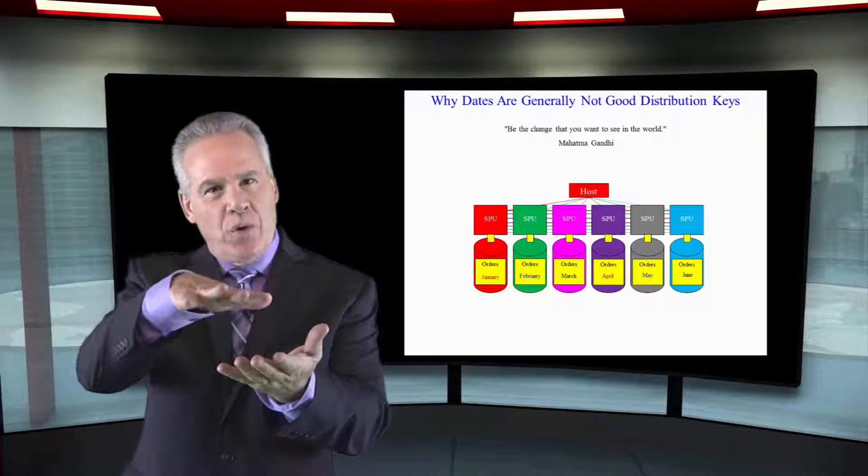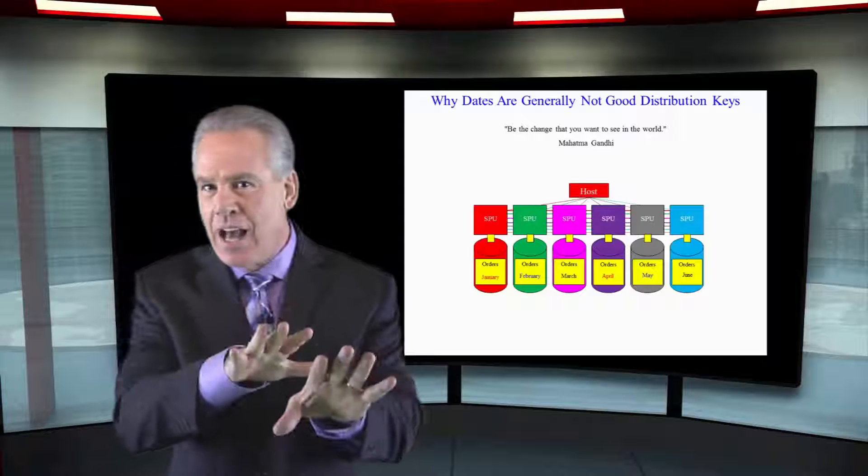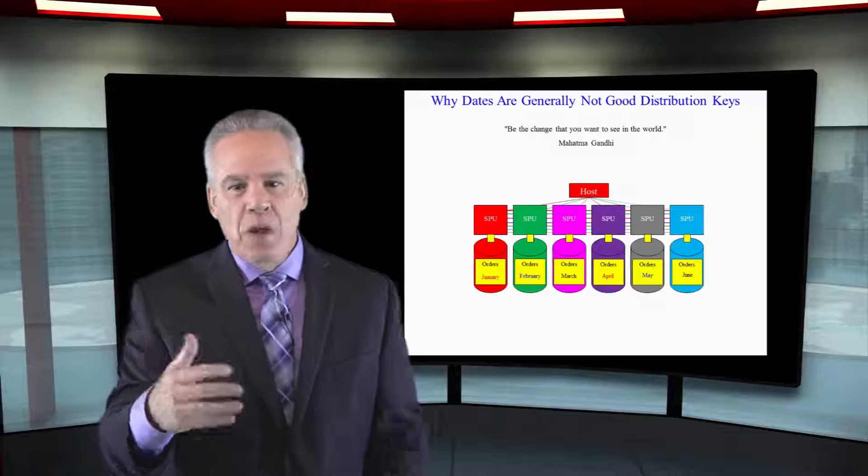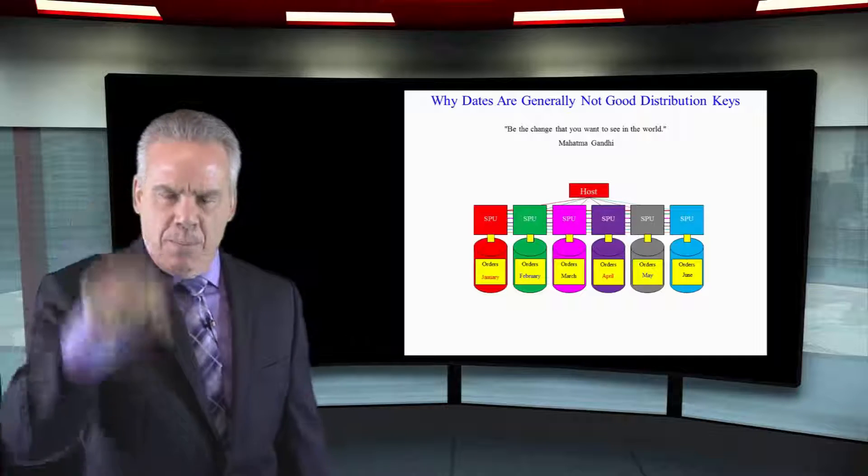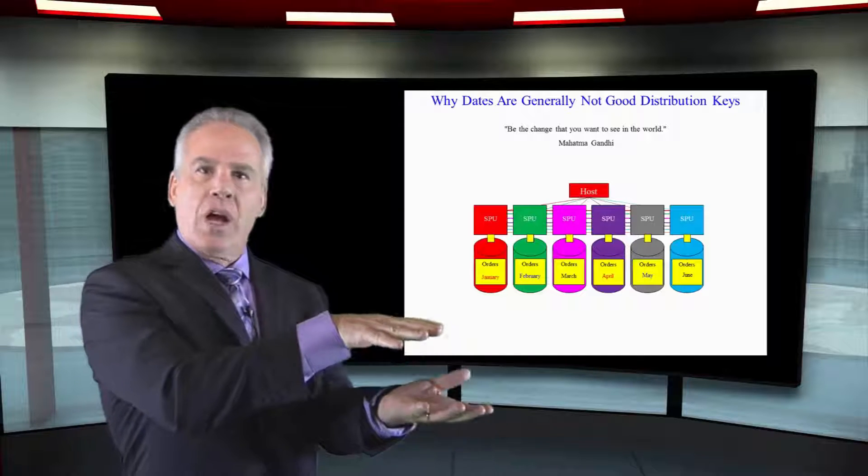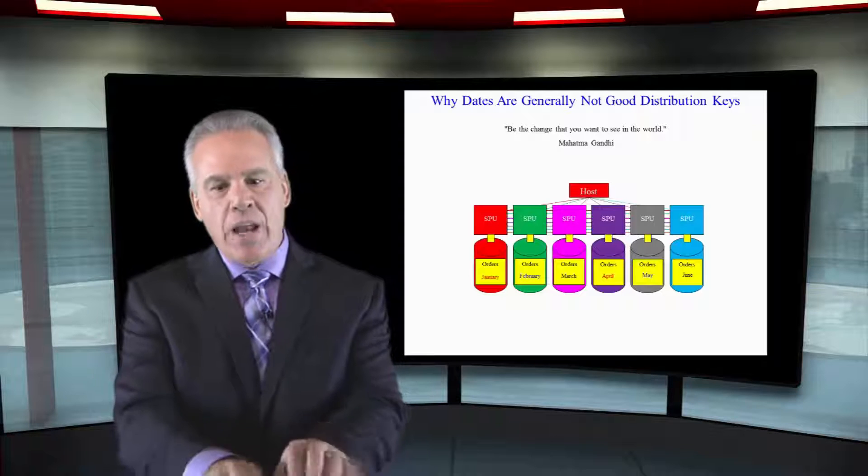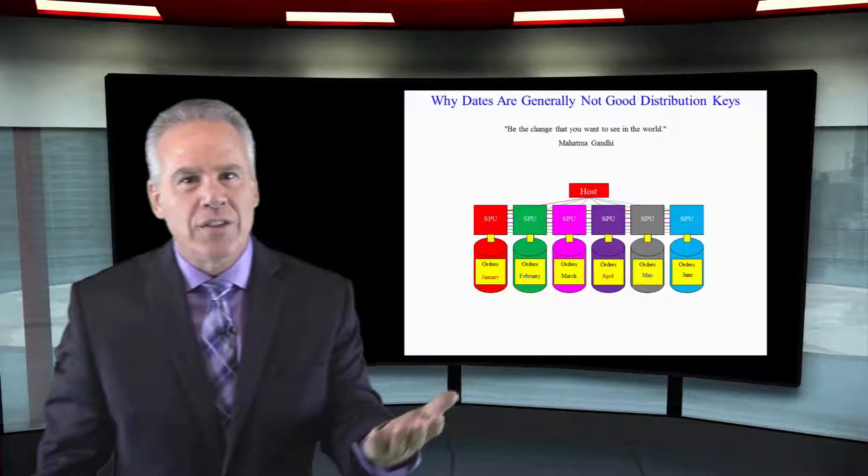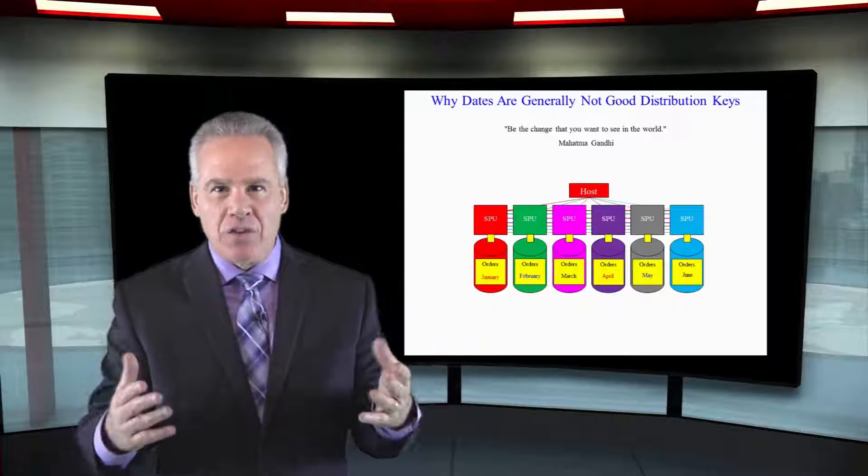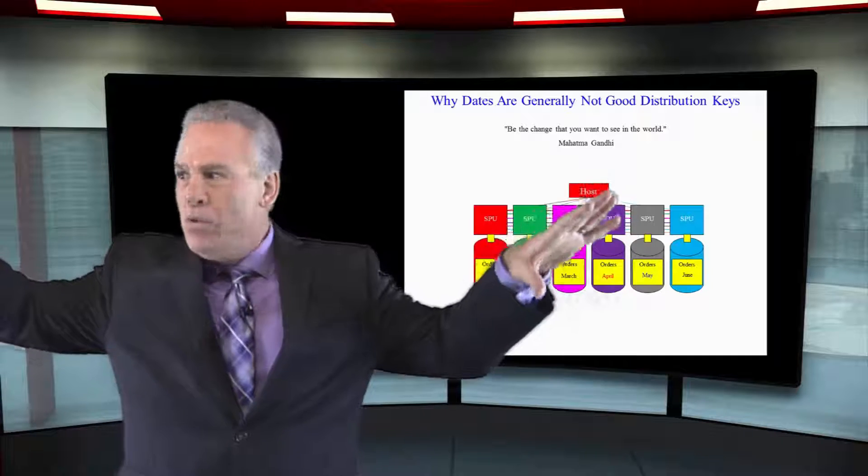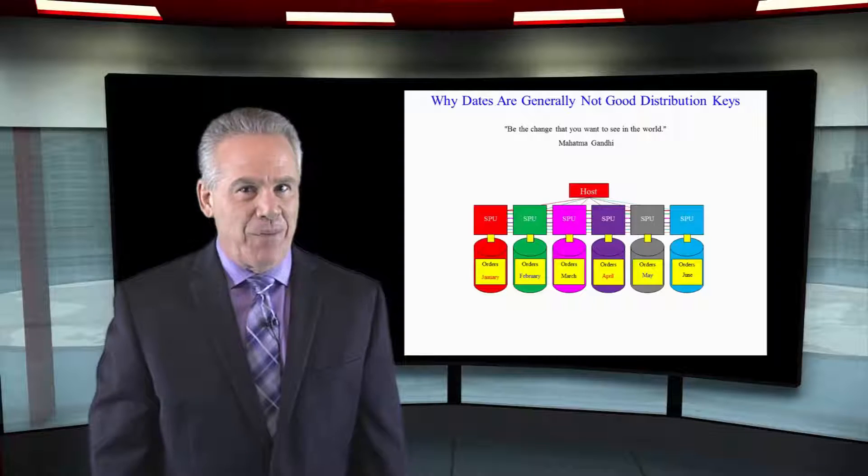The order dates were kind of January, February, March, but that wasn't the distribution key. You sometimes have to be careful not to pick a date column as your distribution key. When you do that, all of maybe the January orders are going to go to one SPU. All the January orders are on SPU one, all the February orders are on SPU two and so on. When we run queries like, what happened between January 1st and January 31st? Only one SPU is out there doing all the work. The real cleverness about the Netezza system is that they're going to break the data up so each SPU processes a portion of that naturally. That's why you may not want to consider making a date column your distribution key.